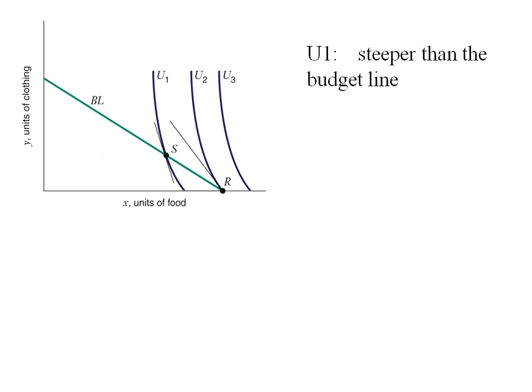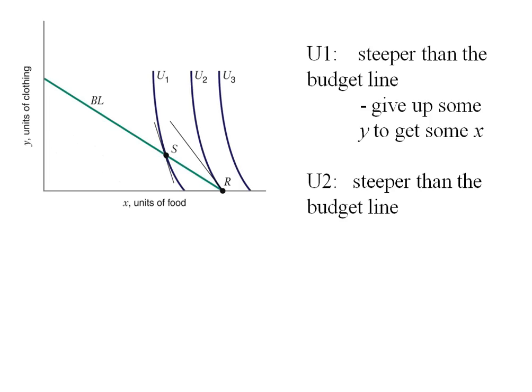Here's how we can visualize this. Let's look at U1, indifference curve 1. Notice it's steeper than the budget line at point S. So we'd actually be willing to give up more Y to get some X. We can do so because we still have some income. We can actually get over to U2.